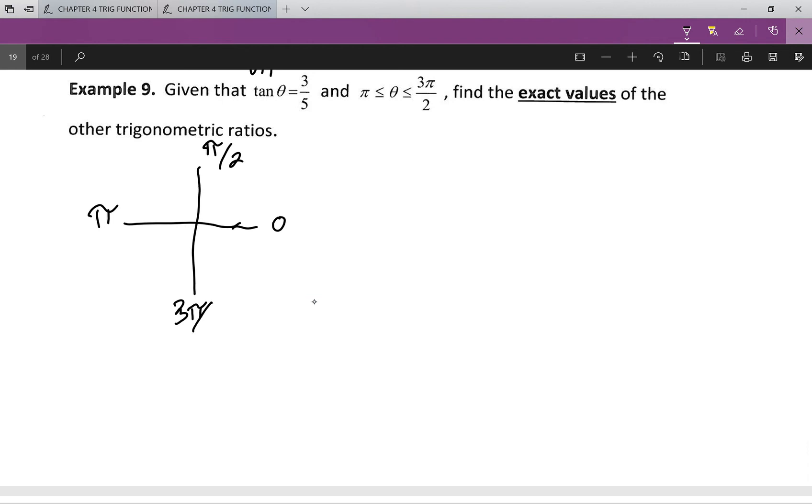three pi by 2, and two pi, between pi and three pi by two is telling me I'm in quadrant 3. Then I have that my tan theta is going to be equal to opposite over adjacent, so 3 over 5. But wait, they both have to be negative values because I'm in that quadrant 3.